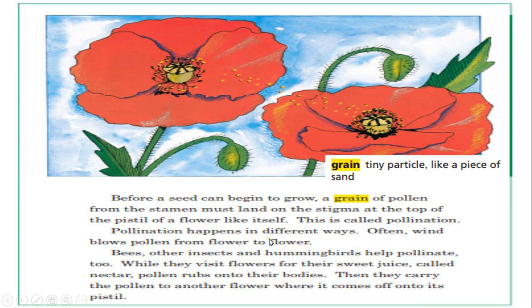Pollination happens in different ways. The first way is when the wind blows away the pollen from one flower to another. Often wind blows pollen from flower to flower. When the wind blows away the pollen from one flower to another, it is called pollination. This is the first method of pollination.